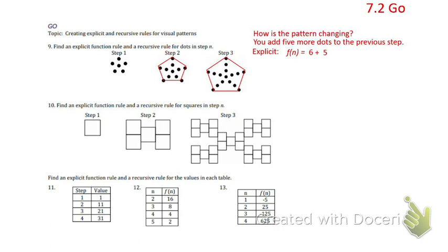If it's the second term, then it's n minus two, and so on. Well, our six dots is from step one, so that's quantity n minus one. When you say f of n equals six plus five quantity n minus one, n minus one means in the first step there were six dots, and we're adding fives each time.